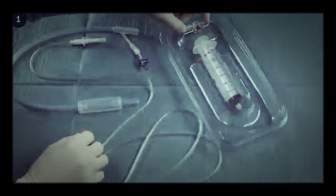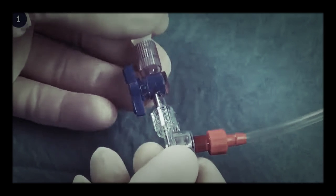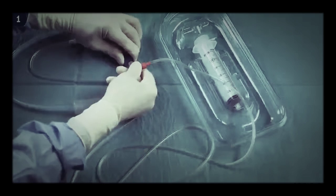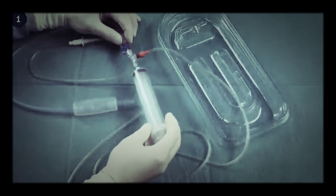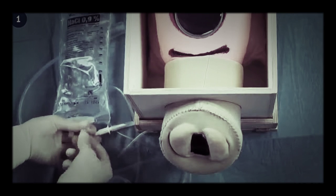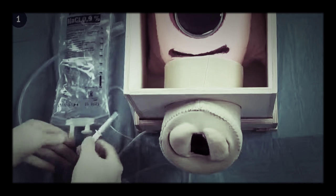The giving set is attached to the top of the three-way connector. Then the Bakri balloon and the syringe are attached on opposite ends of the three-way connector. Lastly, the IV giving set is connected to a bag of saline solution.